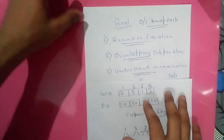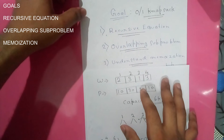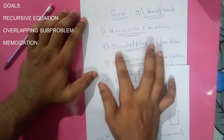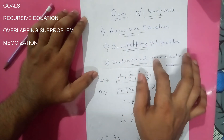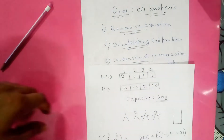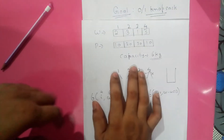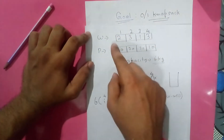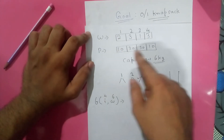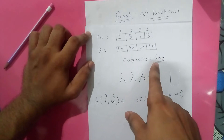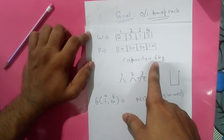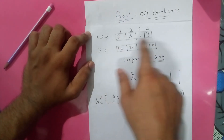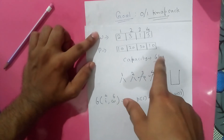Hello everyone, today we will be solving the 0/1 Knapsack problem. Our goal is to walk through the recursive equation, identify all the overlapping sub-problems, and understand the memoization process. We have four items with associated weights and profits, a maximum knapsack capacity of 6 kg, and our purpose is to find the maximum profit without exceeding this capacity.